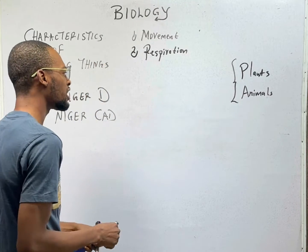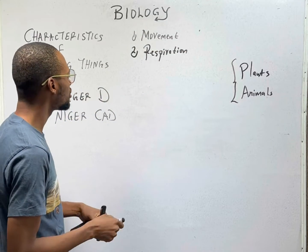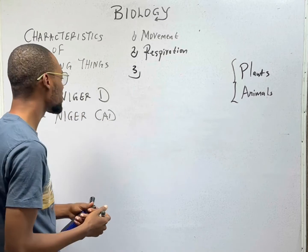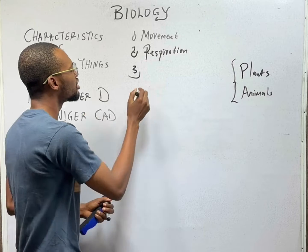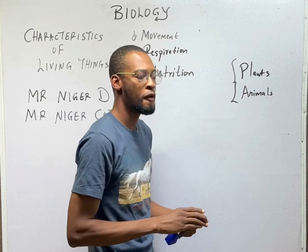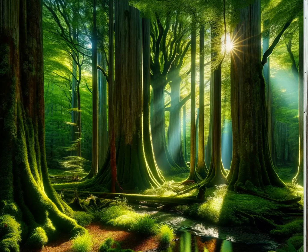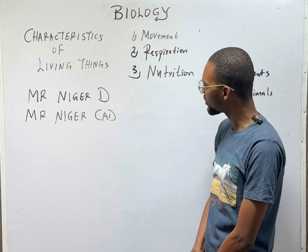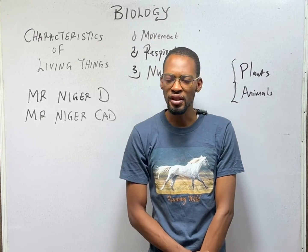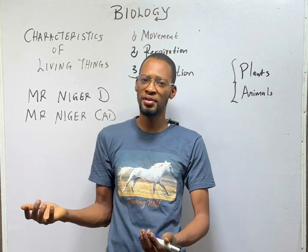Why do animals need oxygen? Both goats and humans are classified under animals — take note of that. N stands for nutrition. Another word for nutrition is feeding. Living things feed to survive. You cannot tell me that you have not eaten for the past 6 months, because that would remove you from the list of living things. You can't survive without food, water, or nutrients for 6 months. Nutrition is very, very important. Plants feed and animals feed, but there are two modes of feeding.